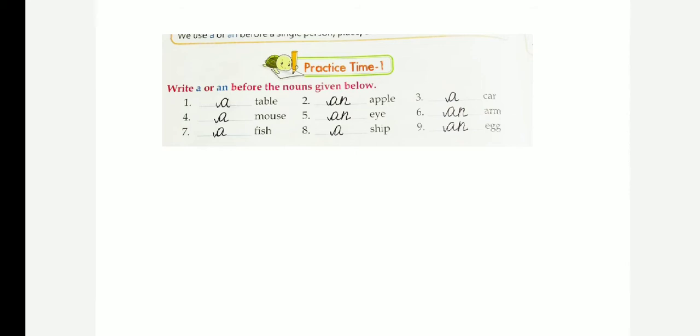Children, listen. We use 'an' before nouns which begin with a vowel sound. You know vowels, which are the vowels? A, E, I, O, U. So we use 'an' before nouns which begin with a vowel sound. We use 'a' before nouns which begin with a consonant sound. Okay. We use 'a' or 'an' before a single person, place, animal, or thing.